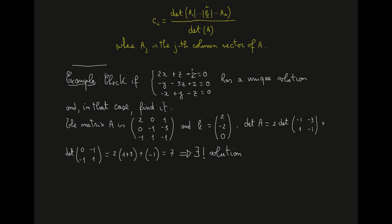Now for the constant term: in the matrix equation Ax=B, the constant terms go on the right-hand side as vector B. The minus 2 in the first equation moves to the right-hand side and becomes positive 2, so the first entry of B is 2. The plus 2 in the second equation becomes negative 2 when moved to the right-hand side. The last equation has no constant term, so the last entry of B is 0.